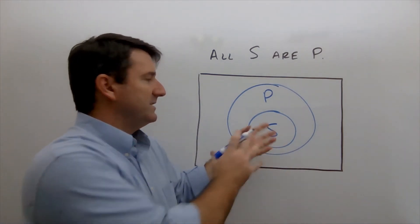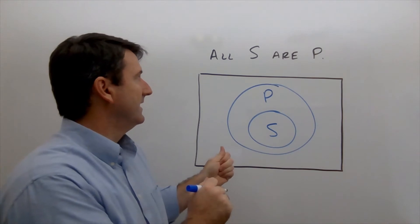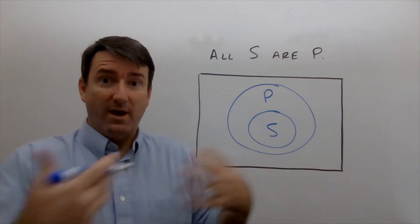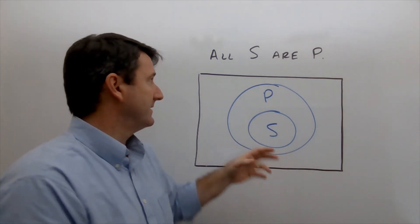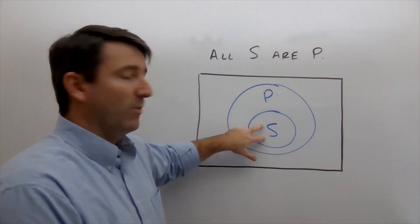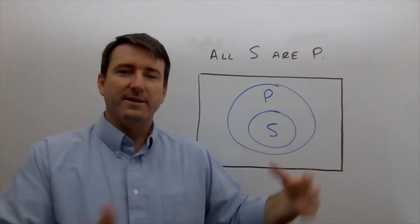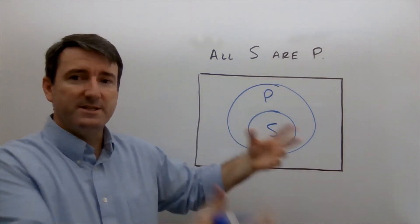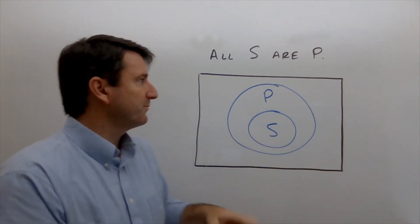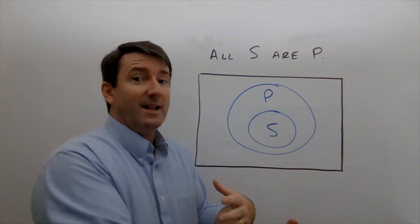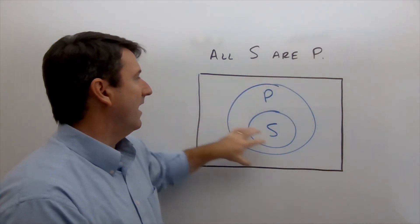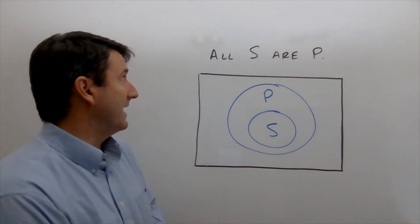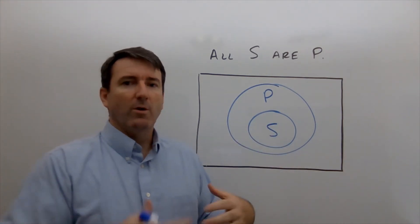One thing to note is that from this categorical proposition we can't make any determination going the other way. We can't say whether or not all mammals are whales. Strictly from the proposition 'All whales are mammals,' there's nothing that tells us whether there are any mammals that are not whales. This is what our Venn diagram looks like for All S are P.